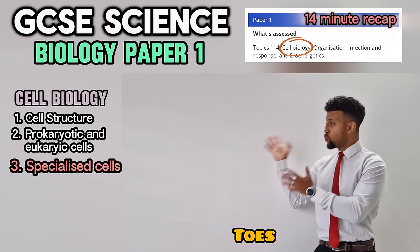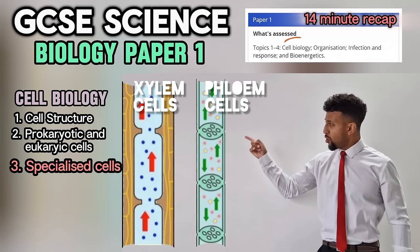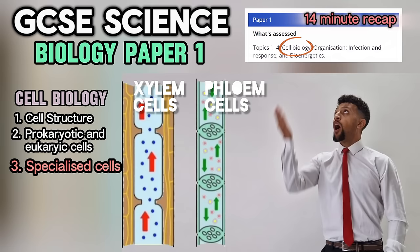Root hair cells take in water. Xylem cells are the transporters of water up the plant. Phloem cells are a little bit shorter — they move things in a different direction: up and down, carrying food inside the stem.